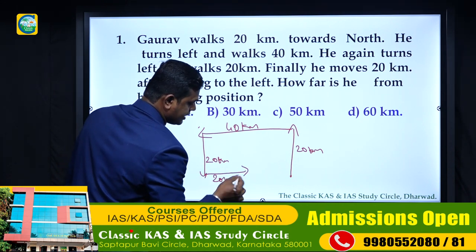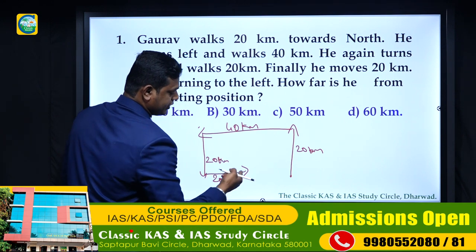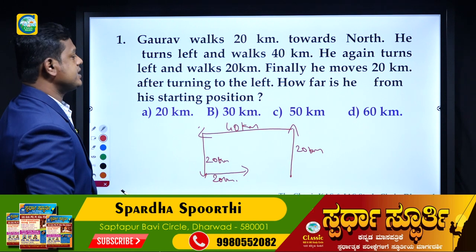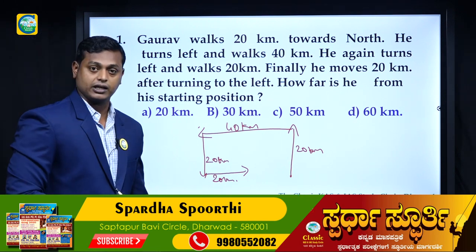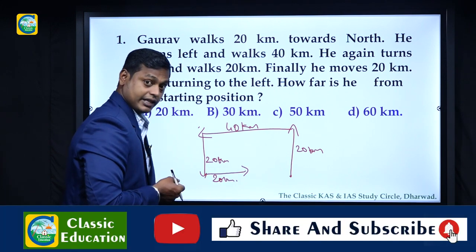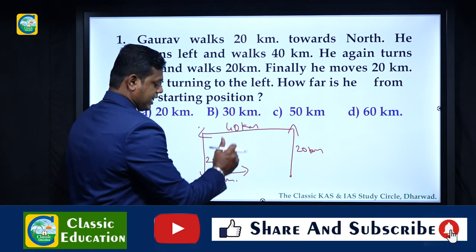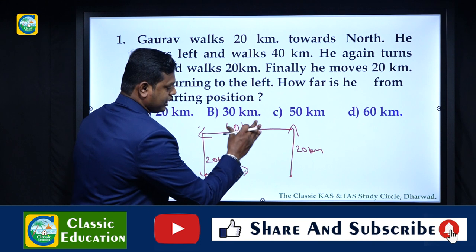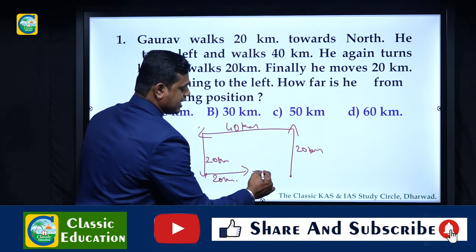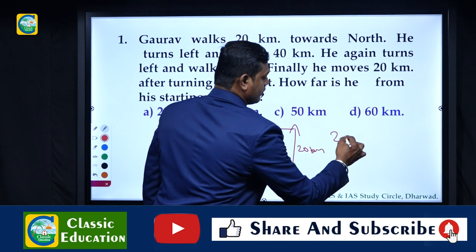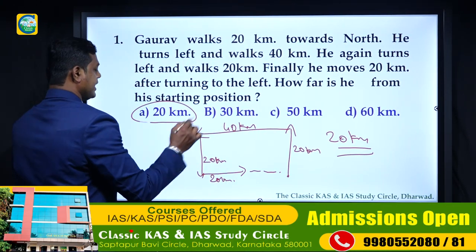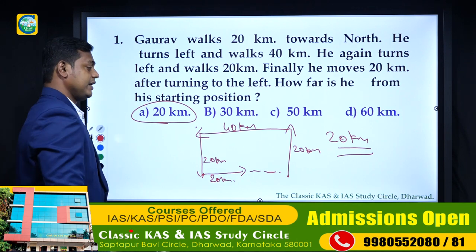How far is he from the starting position? He walked 40 then 20 then 20 - remaining distance: 40 minus 40 is zero on one axis, and 20 minus 20 is zero on another, leaving 20 kilometers. The remaining distance is 20 kilometers. So option number A is the right answer.